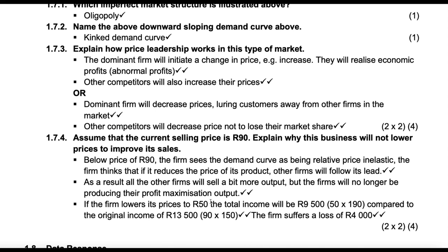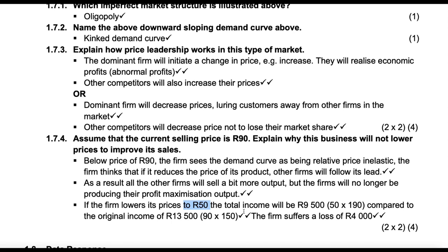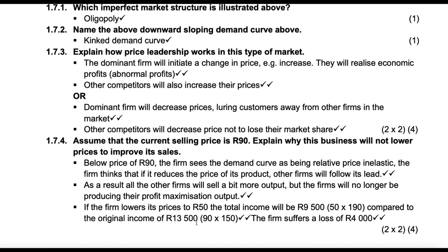Then assume that the current price is 90. Explain why the firm will not lower its price. The only value we saw was 50. So basically, like I showed you, if the firm lowers the price to 50 rand, the total income would be 9,500, which is 50 times 190, compared to the original of 13,500. So this firm will suffer a loss that's, nah, we don't say loss. Loss is revenue minus cost. We don't have any cost curves. Their revenue will go down by 4,000. Not to say they'll suffer a loss. They could still be making a profit.